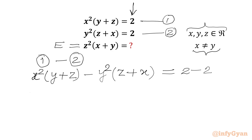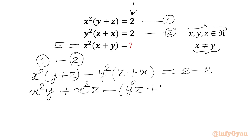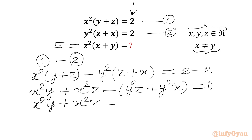Let us use the distributive property. We get x squared y plus x squared z minus y squared z minus y squared x equal to 0. We can also write x squared y plus x squared z minus x squared z minus y squared z minus y squared x equal to 0. Now we will rearrange the terms.